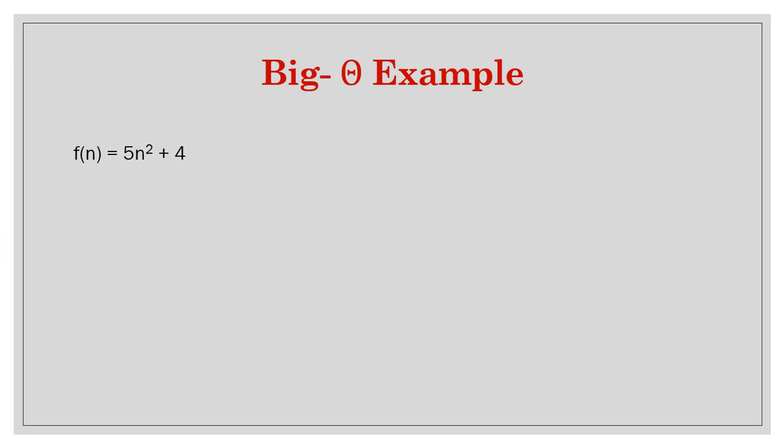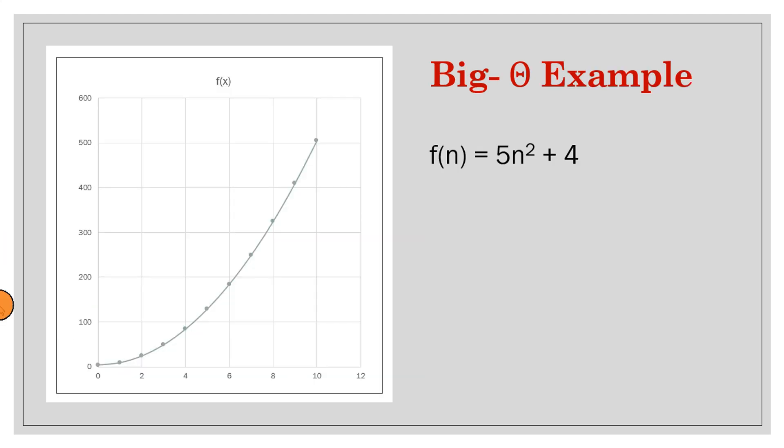So you get the idea. In this case, the answer was Big-Theta of n. Similarly, let's take the quadratic example. Its plot is like this one. Again, if you take 6n², it will plot like this. If you take 3n², it may plot like this.